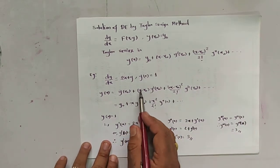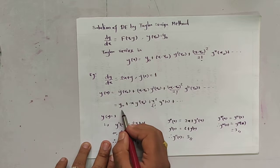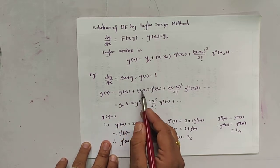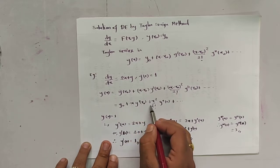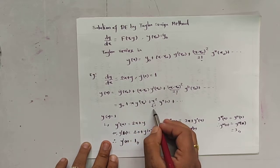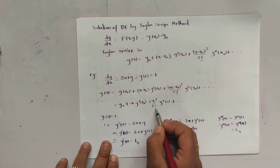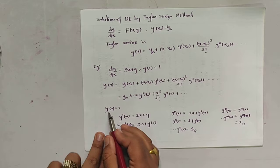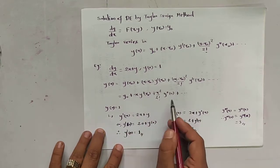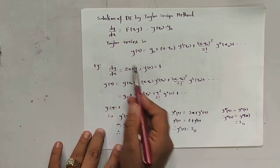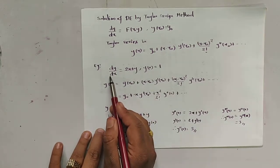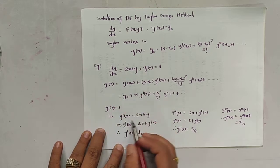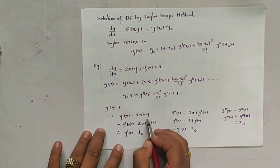Since x₀ = 0, that can be written as y(x) = y₀ + x·y'(0) + x²/2! · y''(0) + ··· Since y₀ = 1, let us find the values from the given equation. The derivative dy/dx equals y'(x) = 2x + y.